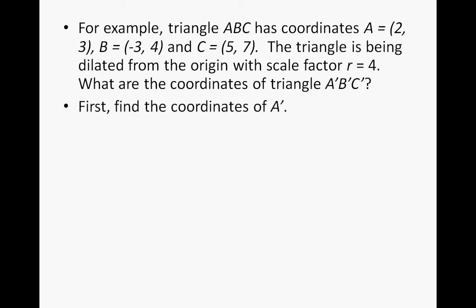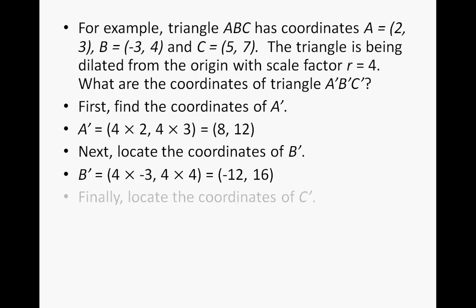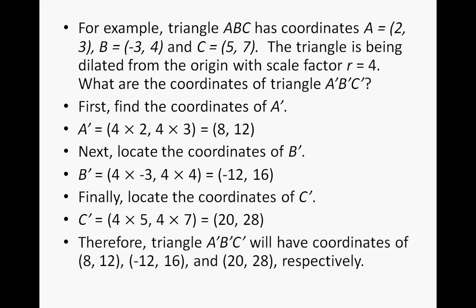Find the coordinates of A prime: 4 times 2 and 4 times 3 gives (8, 12). Next, B prime: 4 times -3 and 4 times 4 gives (-12, 16). Finally, C prime: 4 times 5 and 4 times 7 gives (20, 28). Therefore, triangle A'B'C' has coordinates (8, 12), (-12, 16), and (20, 28) respectively. 'Respectively' means in order — if we say A prime, B prime, C prime, the coordinates must go in that same order.